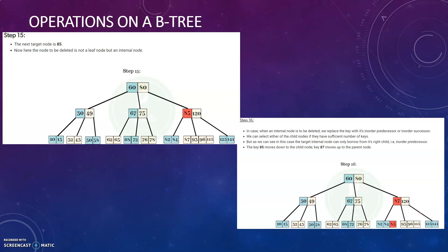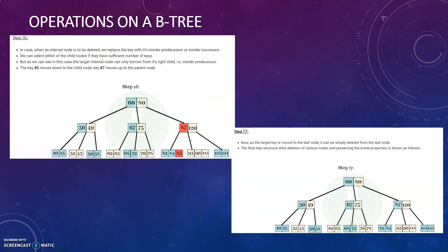The next node to delete is 85. When I delete 85, the minimum criteria is not followed. So the in-order successor 87 comes in place of the parent, and 85 is brought down to the leaf node where it can be deleted safely, since it will satisfy the minimum criteria there. So 87, the in-order successor, comes in place of 85, 85 is brought to the leaf node, and 85 can be deleted easily.